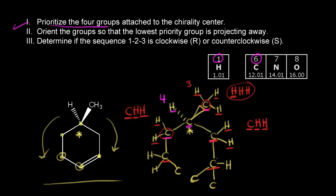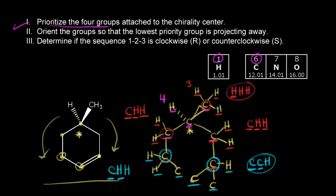We go to the next carbon in each path. The carbon going one way around the ring is bonded to carbon, carbon, hydrogen. The carbon going the other way is bonded to carbon, hydrogen, hydrogen. Looking for the first point of difference: both start with carbon — tie. Then carbon versus hydrogen — the carbon wins. That means this path around the ring is the higher priority and gets number one. The other path around the ring gets number two. So now we've assigned priority to all four groups.